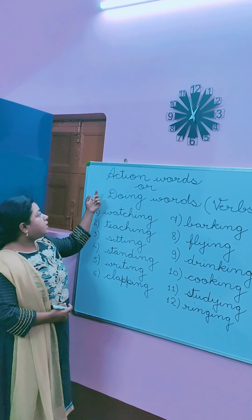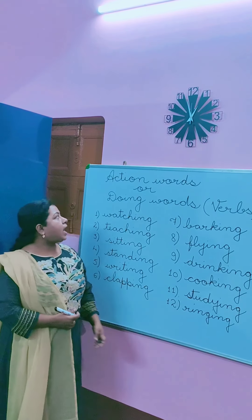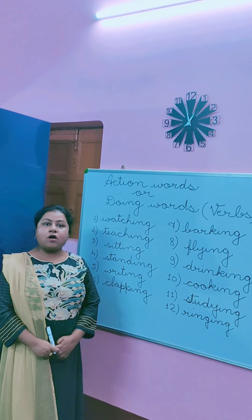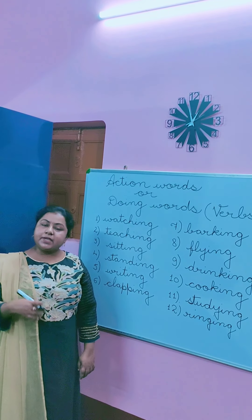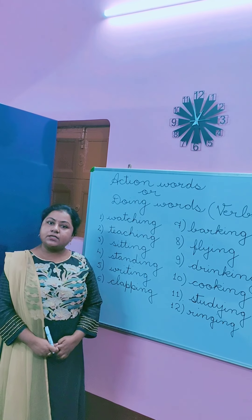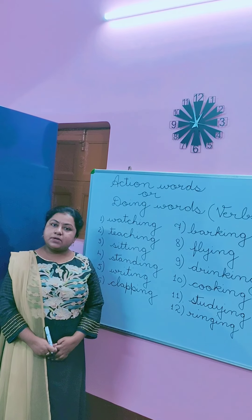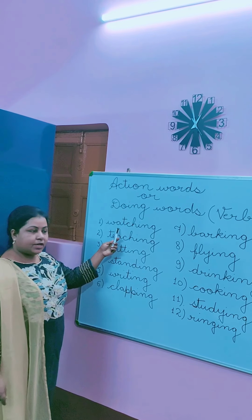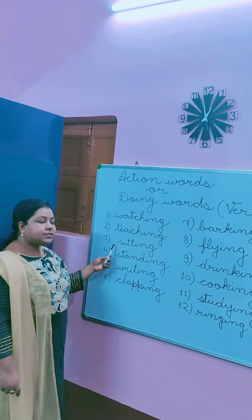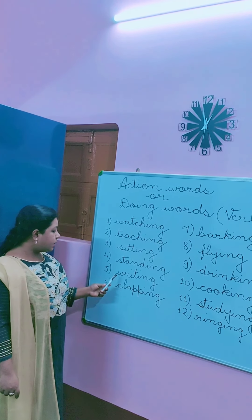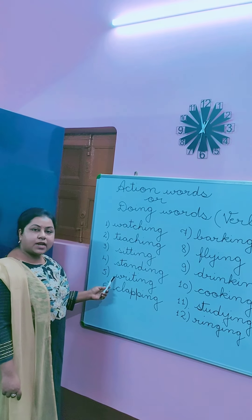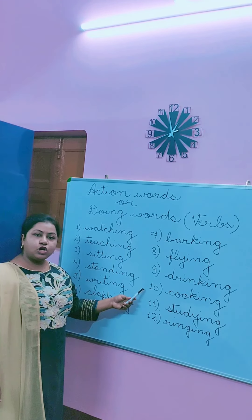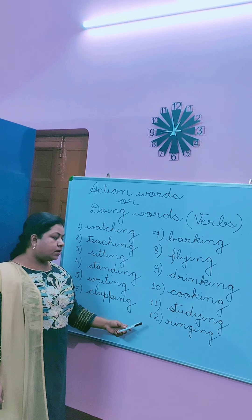So children, once again — action words or doing words, also known as verbs, are actions performed by a person, animal, or thing. Here are some action words: watching, teaching, sitting, standing, writing, clapping, barking, flying, drinking, cooking, studying, ringing. These are actions performed by persons, animals, and things.